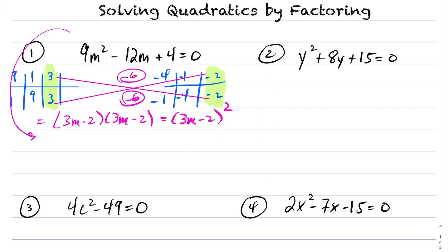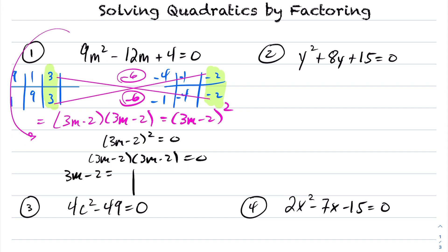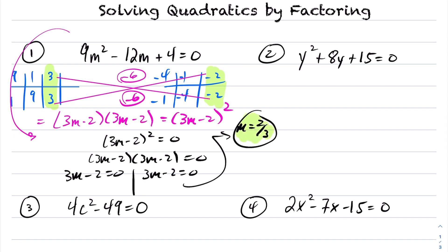Now that we have it factored, we have (3m minus 2) squared equals 0, which is the same as 3m minus 2 times 3m minus 2 equals 0. So either 3m minus 2 is 0, or 3m minus 2 is 0. The only solution, solving for m, is m equals two-thirds. So this quadratic has a single root, and that single root — i.e., where it crosses the x-axis — is at two-thirds.